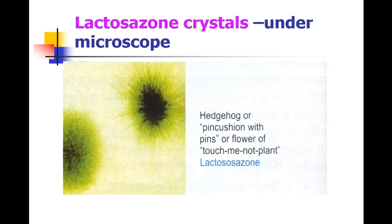The osazone crystals produced by lactose — lactosazone — are yellow-colored, hedgehog-shaped, or pin-cushion-shaped, resembling the flower of a touch-me-not plant. These lactosazone crystals can be produced on reaction with the osazone reagent, and this is the confirmatory test for lactose.